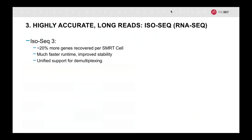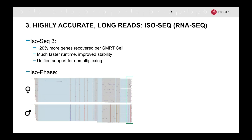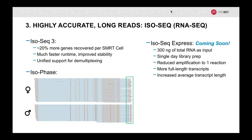PacBio can also do full-length RNA sequencing, which we call isoform sequencing or IsoSeq. HiFi data from the latest chemistry analyzed with the latest bioinformatics pipeline, IsoSeq3, is able to recover 20% more genes per SMRT cell on average. My colleague Liz Tseng has developed algorithms to use genetic variation between two alleles to separate or phase transcripts into their appropriate alleles and call allele-specific splicing with a new tool called IsoPhase. We also have an express workflow coming soon that reduces the total RNA needed down to 300 nanograms and gives more full-length transcripts with increased average transcript length.